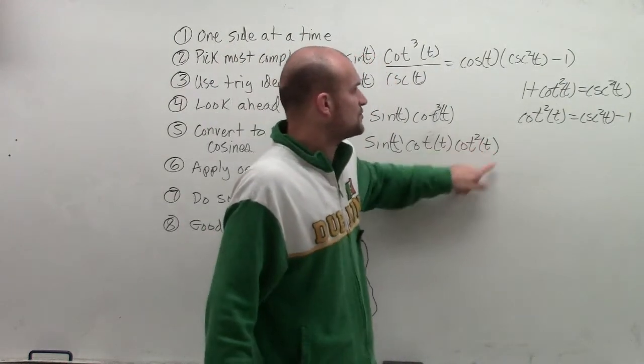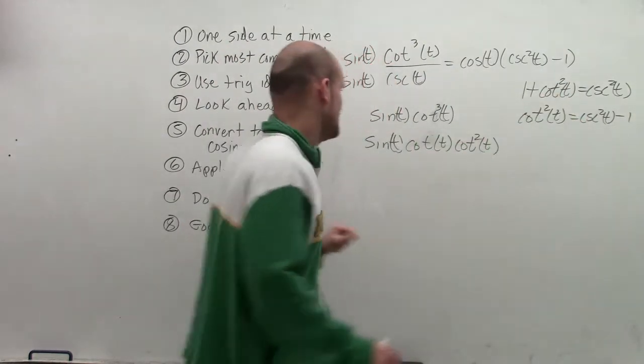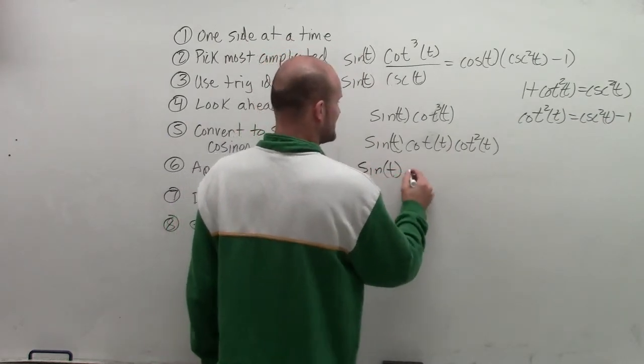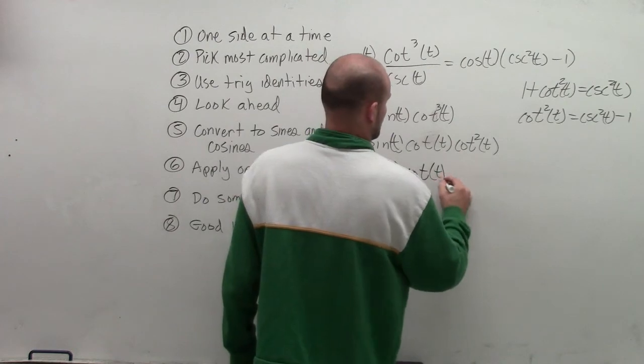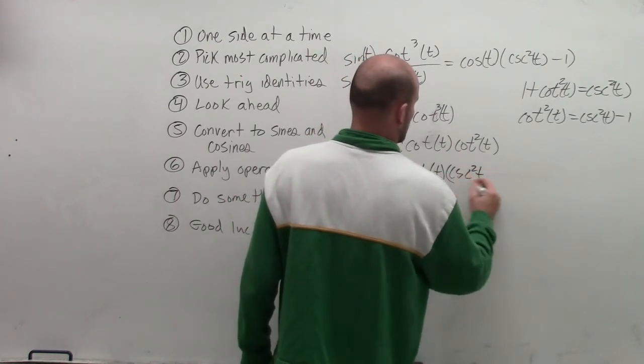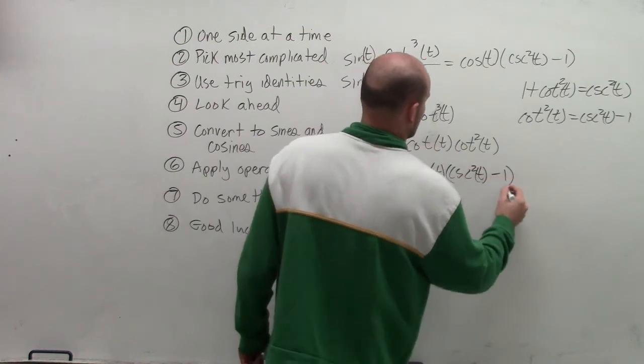Now I can rewrite cotangent squared of t. So we're getting somewhere. We're starting to get there. Times cosecant squared of t minus 1.